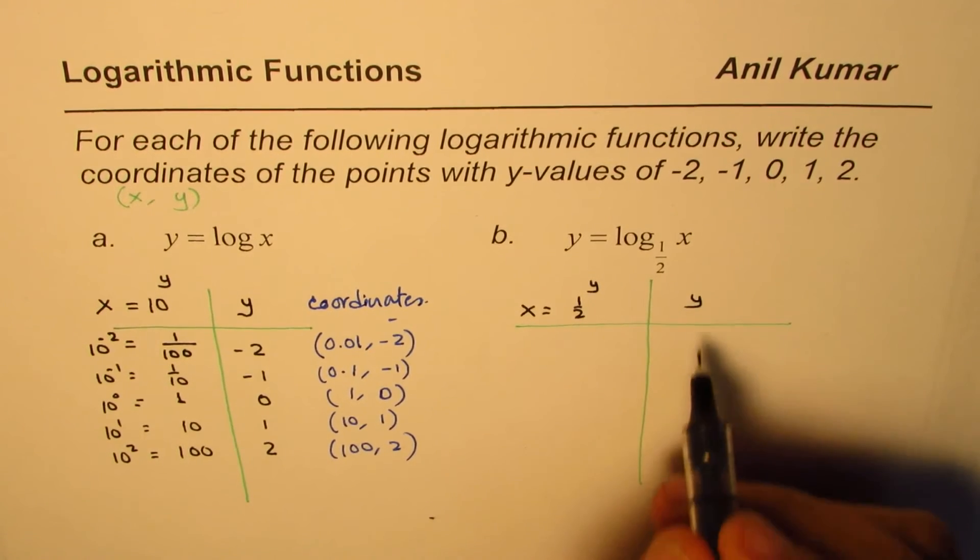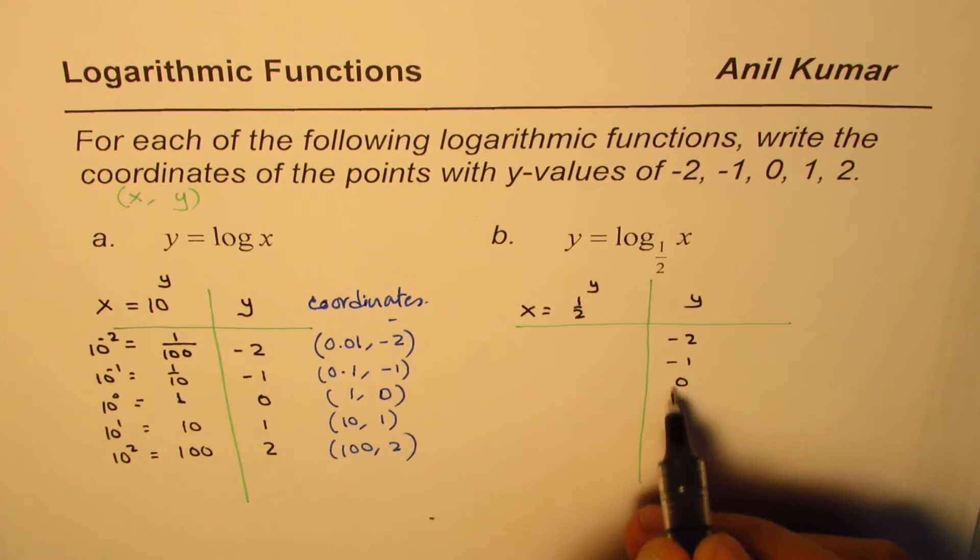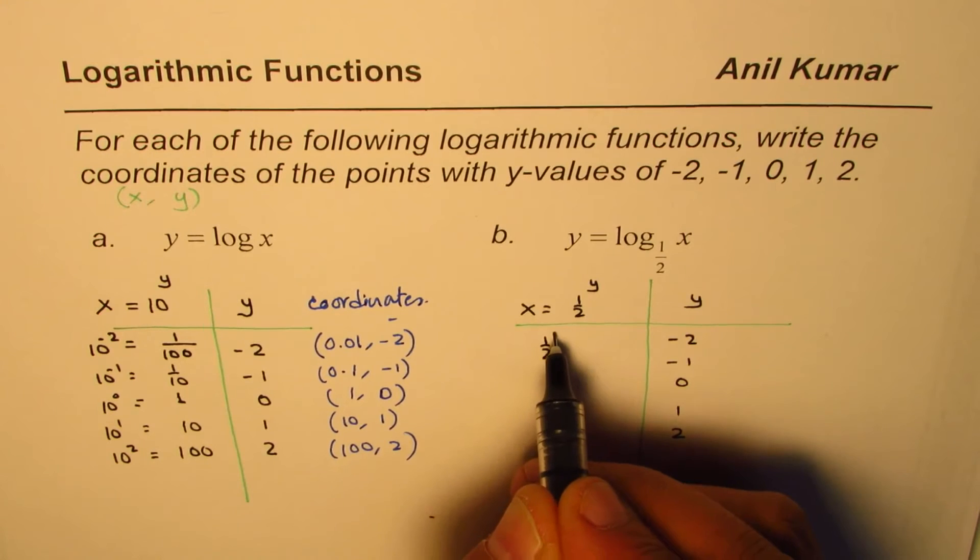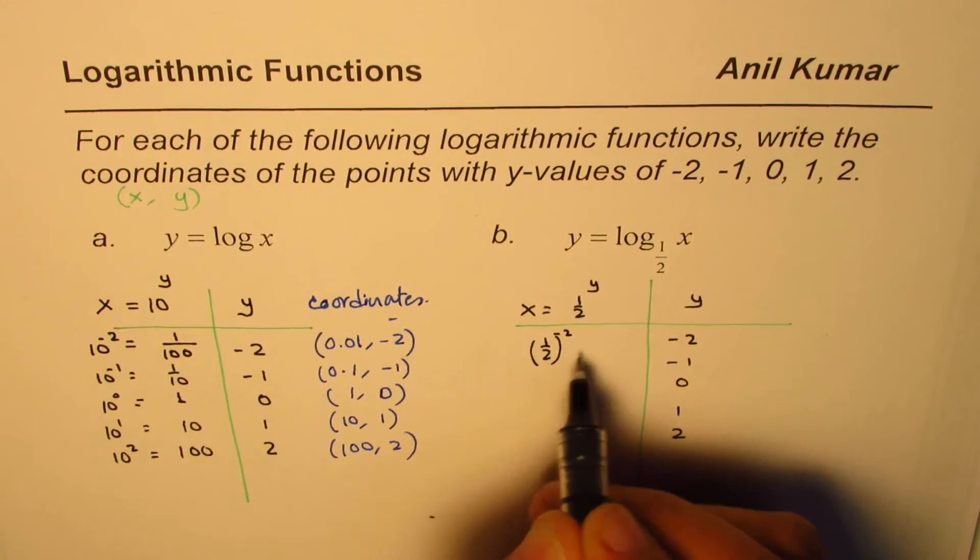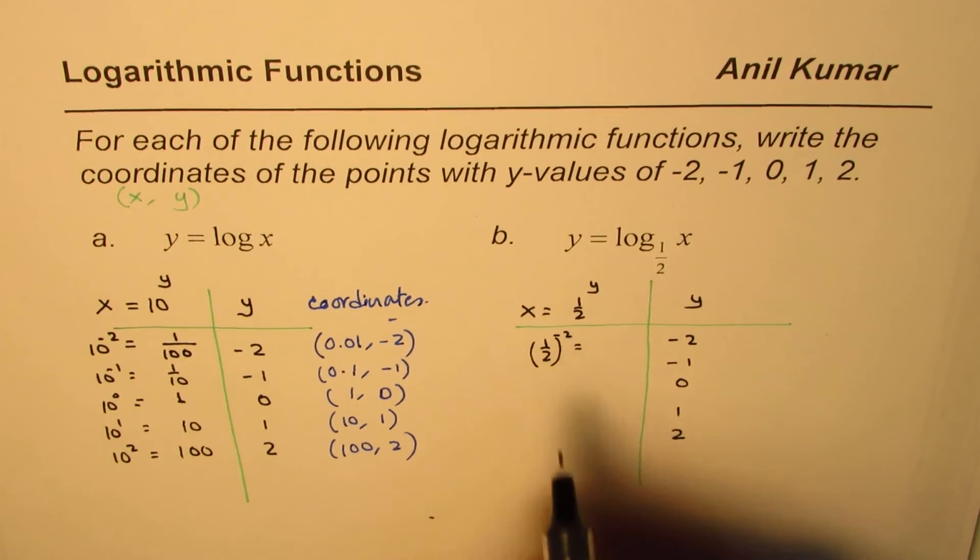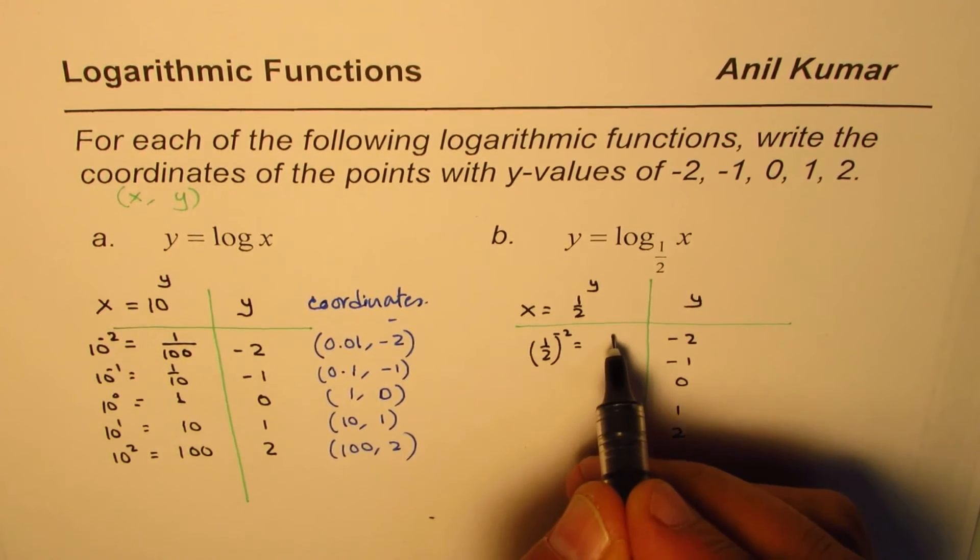And the y values are given to us as minus 2, minus 1, 0, 1, and 2. So, the x values will be half to the power of minus 2. Minus will make it reciprocal. So, 2 to the power of 2, which is 4.